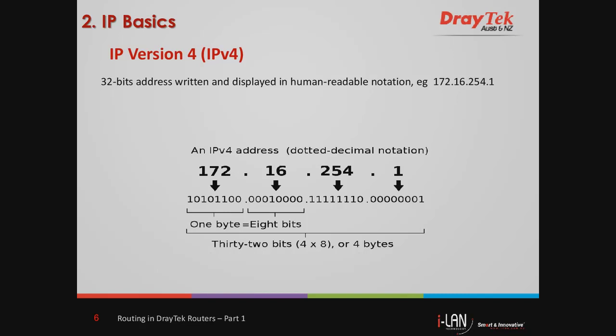IPv4 consists of 32 bits and is written in groups of 4 octets, that is, 4 groups of 8 bits. Rather than writing the IP addresses as 0s and 1s, it's written in human-readable form, for instance, 172.16.254.1.